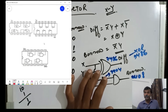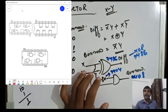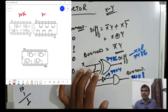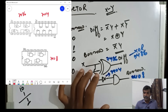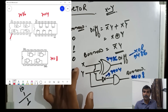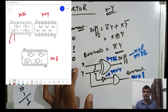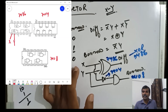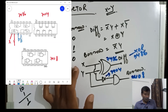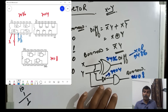So these are the three ICs required for implementing the half subtractor: IC 7486 is the XOR gate, IC 7404 is the NOT gate, and IC 7408 is the AND gate. First, connect X and Y to one of the XOR gates — this is X, this is Y — and this output is the difference DIFF.